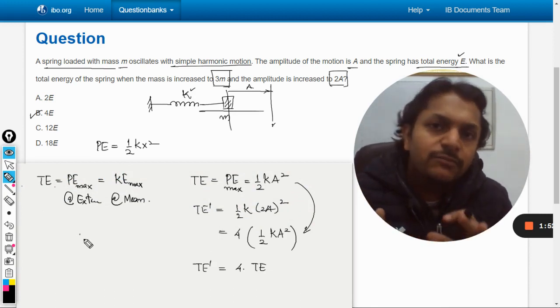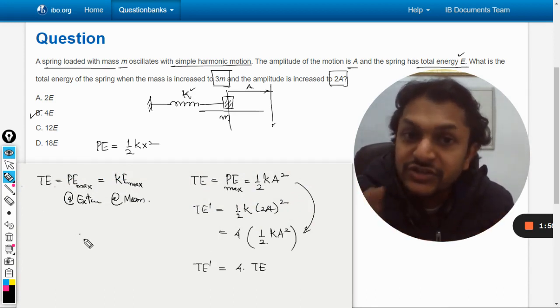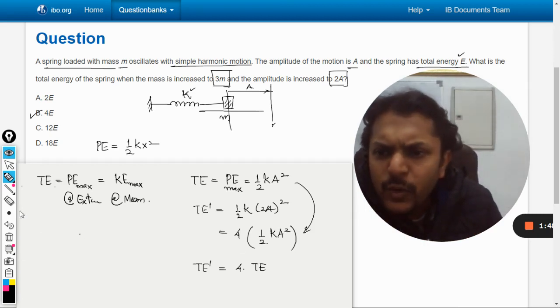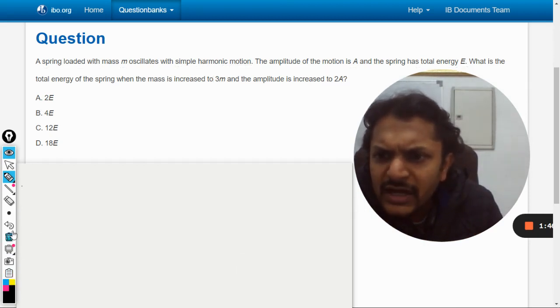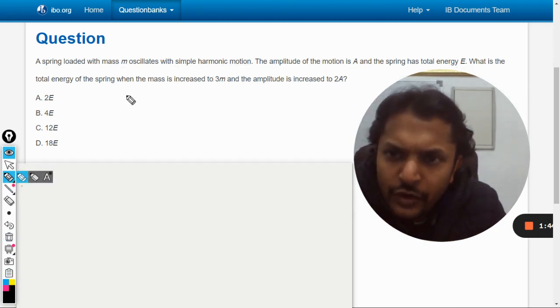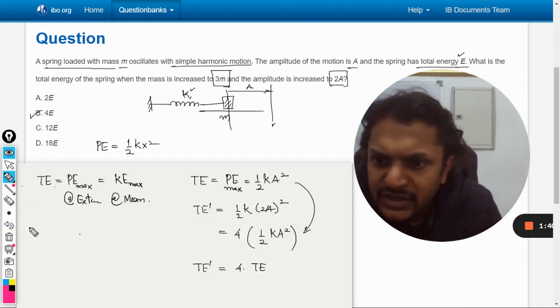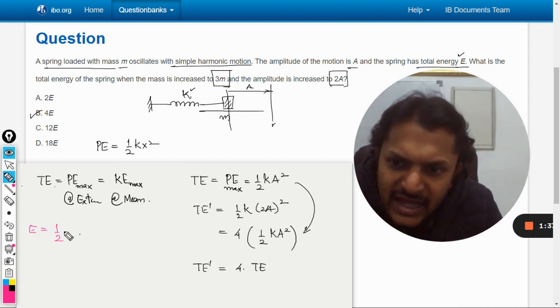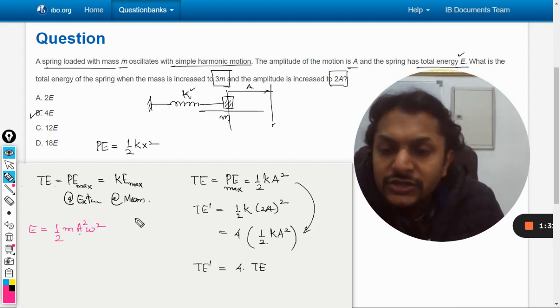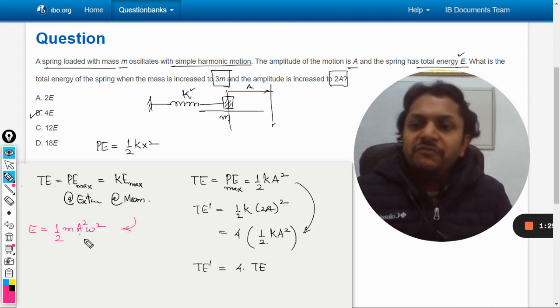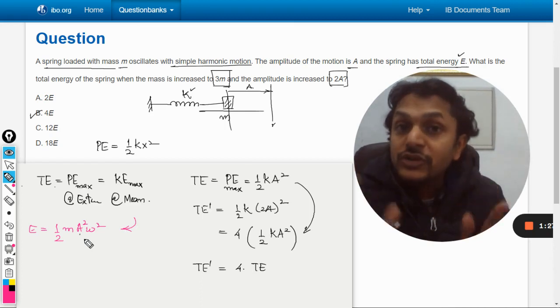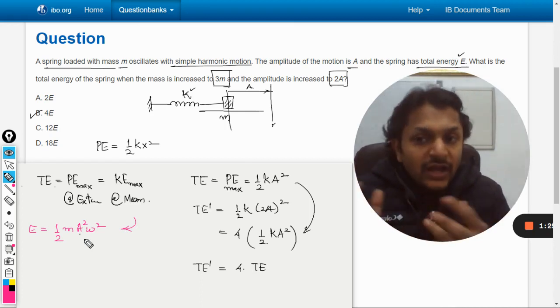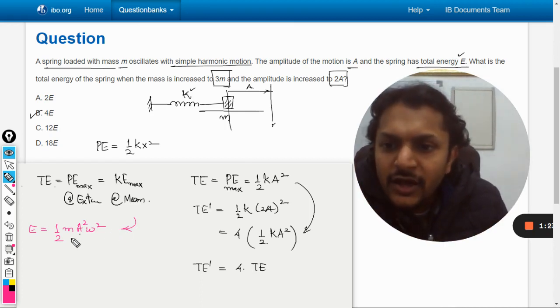Now one thing more I am going to tell you is what is the big mistake that students generally do here. Because there is one more formula, and that formula is for the case of energy. That formula is (1/2)mA²ω². You might be thinking, why can't we use this formula? Because this formula is also given in the formula booklet.